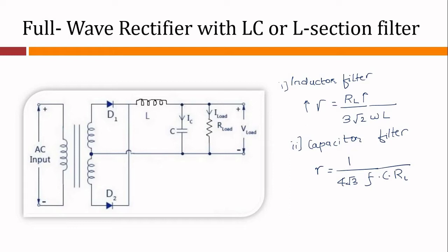By using a combination of inductor and capacitor, the ripple factor can be very much lowered, diode currents can be restricted, and simultaneously the ripple factor can be made almost independent of the load resistance. The two most commonly used combinations are choke input or L section filter, and capacitor input or PI filter. This experiment is all about the LC or L section filter.